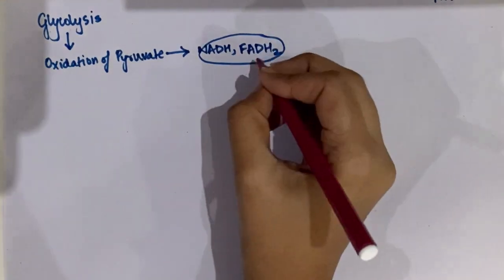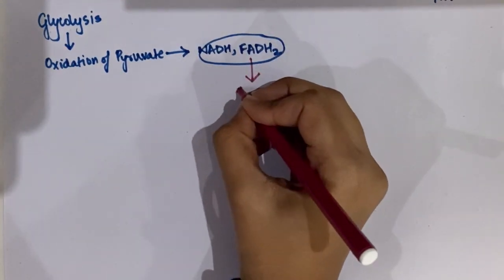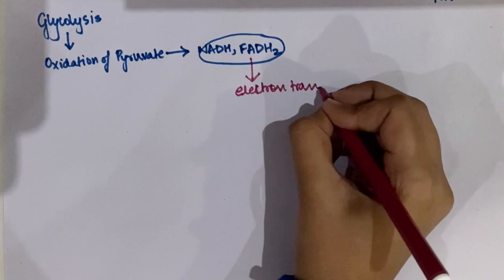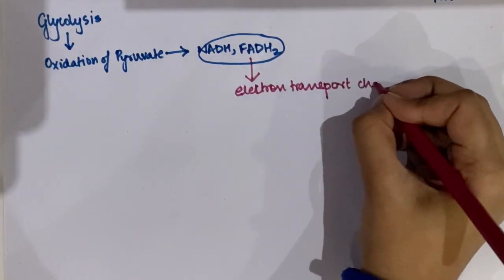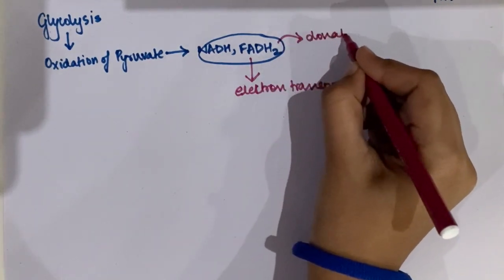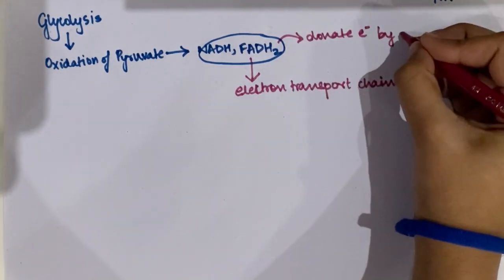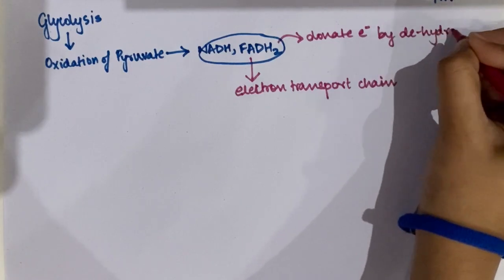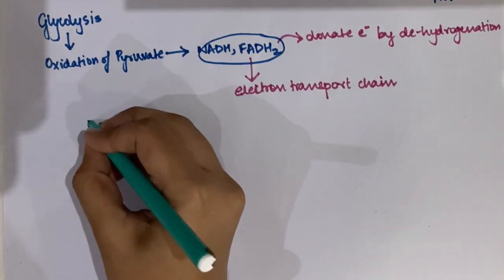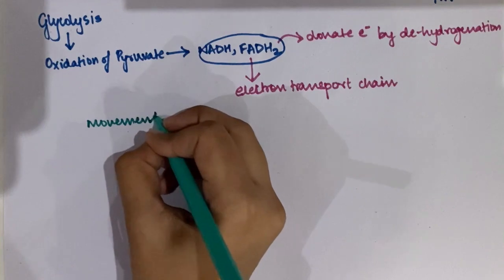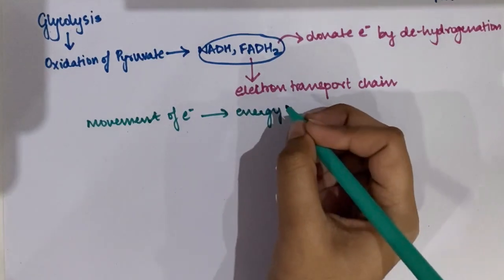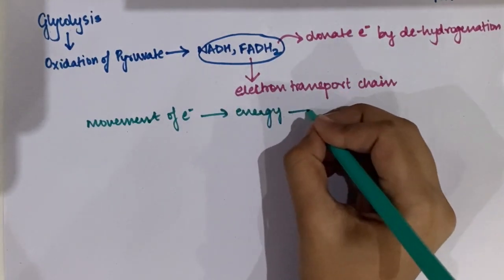These energy equivalent products contain electrons which are donated to enzyme complexes in the inner mitochondrial membrane. We're going to talk about these enzyme complexes, but first let's understand the general process of the electron transport chain. These energy equivalents donate their electrons to the electron transport chain present in the inner membrane of the mitochondria through dehydrogenation or oxidation of these complexes, and when this happens, electrons are lost — because loss of electrons is oxidation.